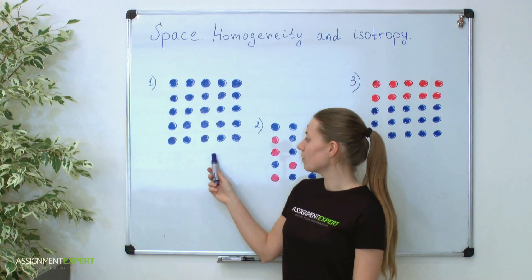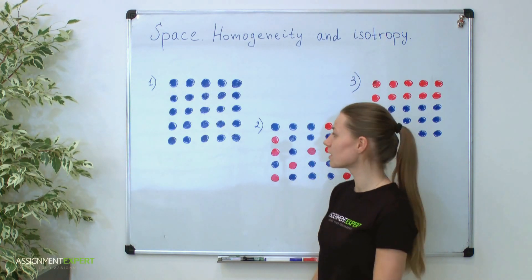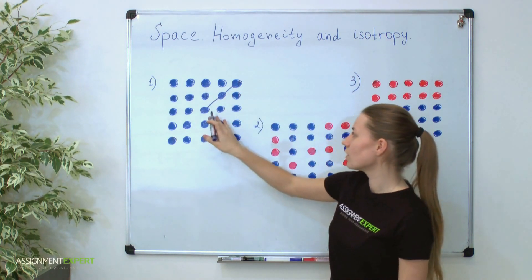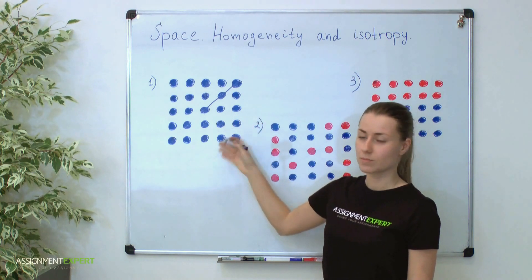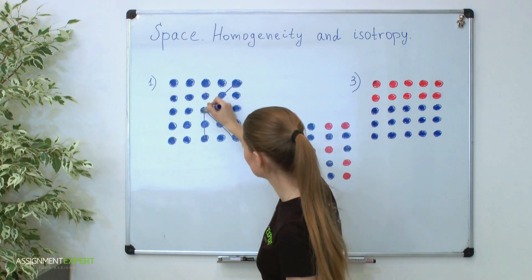Moreover, it is also isotropic because here you can't find any preferred direction. For instance, if I direct a light beam in diagonal direction, you see that it will cross a fixed number of blue atoms. The same result will be obtained in any other direction of this crystal.